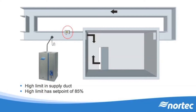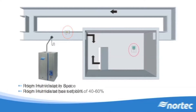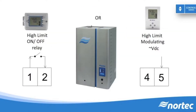A high limit will be placed in the supply duct downwind from the distribution and will have a high set point of 85%, when contrasted to a room controller that will be placed in the room and will have a required space set point of 40–60%. Again, the high limit humidistat can also be one of two types: on-off or modulating.